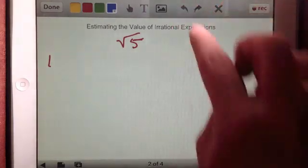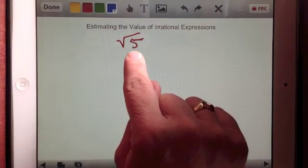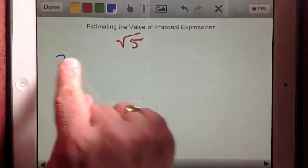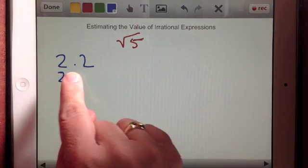So what I can do now is, I know 3 is past square root of 5, so I'm going to go with 2, and I'm going to just take, let's say, 2.2. Now if I multiply 2.2 by itself,